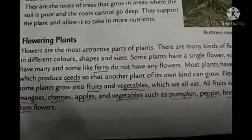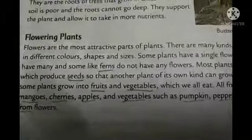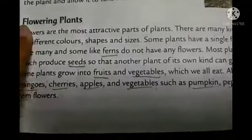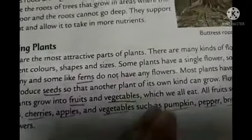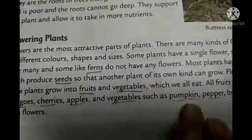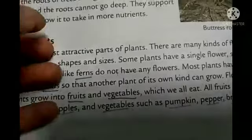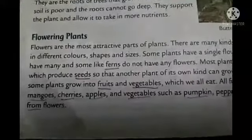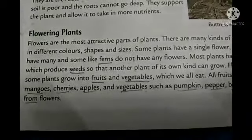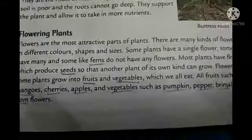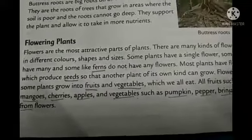We are going to continue from page number 53 on flowering plants. The flower is the most attractive part of a plant, and there are so many kinds of plants of different colors, shapes, and sizes. You know about many flowers like marigold, rose, sunflower, hibiscus, periwinkle, and zinnia. Some plants have a single flower, and some have many flowers.